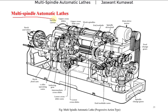In these automatic lathes, the number of spindles is more than one, as opposed to just one in single spindle automatic lathes. Multi spindle automatic lathes can be made in a variety of models with 2, 4, 5, 6, or 8 spindles.